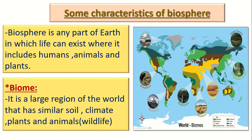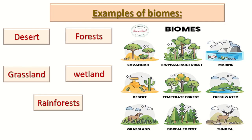Examples of biomes include the desert, forest, grassland, wetland, and rainforest — each has similar soil, similar climate, similar plants, and similar animals throughout.